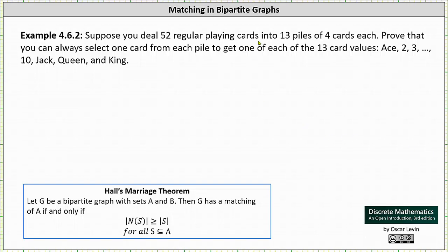Suppose you deal 52 regular playing cards into 13 piles of four cards each. Prove that you can always select one card from each pile to get one of each of the 13 card values, which are ace, two, three, all the way through ten, jack, queen, and king.